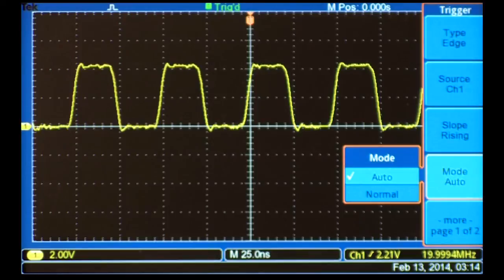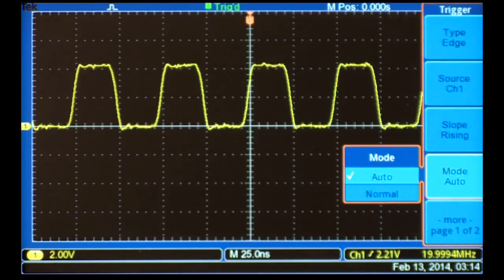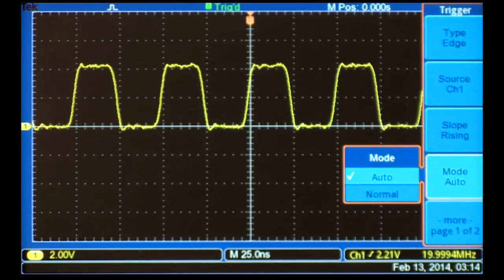Auto mode lets the acquisition free run. The scope will trigger periodically even if the trigger conditions are not met. This is the default, and it's a good place to start while you're getting the settings nailed down. Normal mode only updates when the trigger conditions have been met.